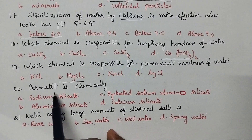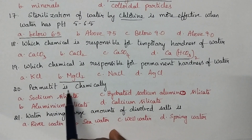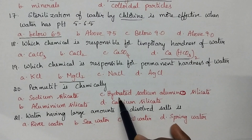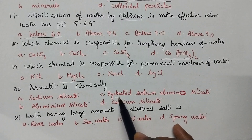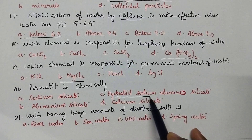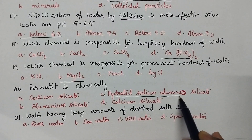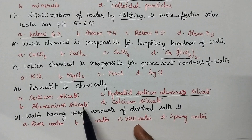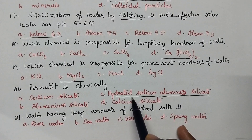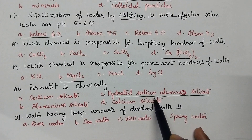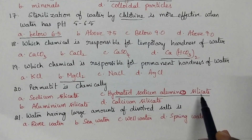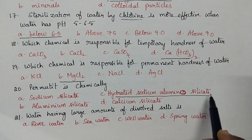Permutit, or zeolite, is chemically named as hydrated sodium alumino silicate.